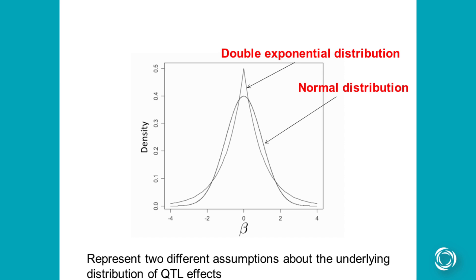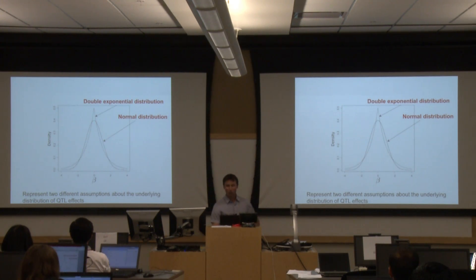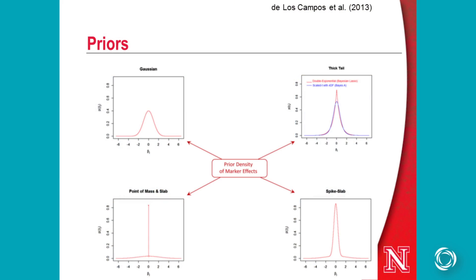These are pictures of the different distributions marker effects can come from. The normal distribution is what ridge regression assumes. The double exponential distribution has heavier tails, so more markers are constrained and pushed back towards zero, but some markers — because of the heavier tails — are allowed to have a larger effect than what the normal distribution would permit. There are different shapes of distributions available.